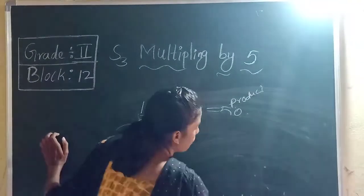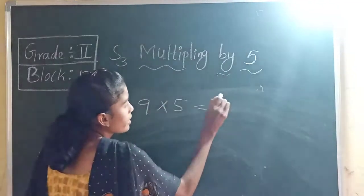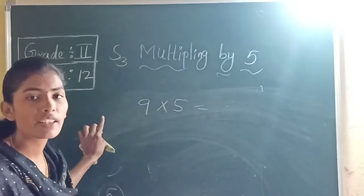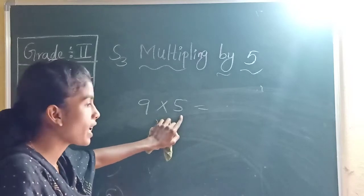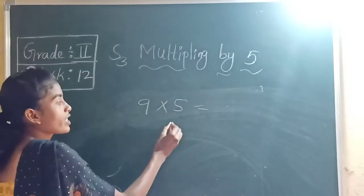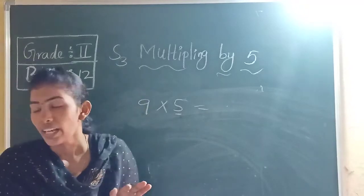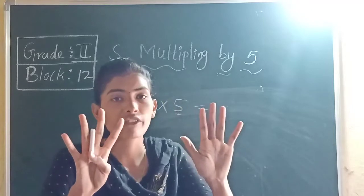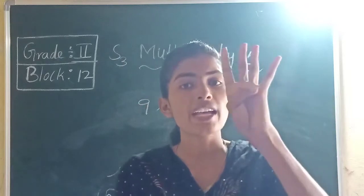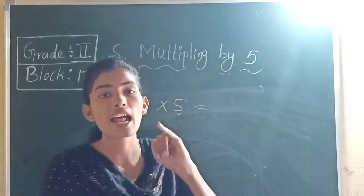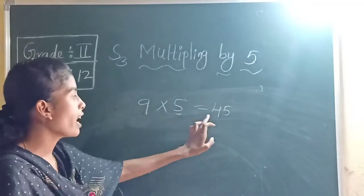For 9 into 5, take 9 fingers and use skip count: 5, 10, 15, 20, 25, 30, 35, 40, 45. The answer is 45. So 9 fives are 45.